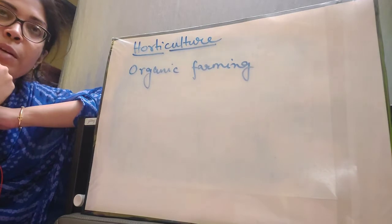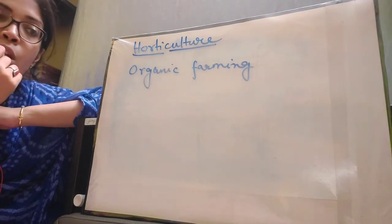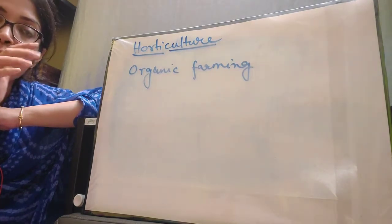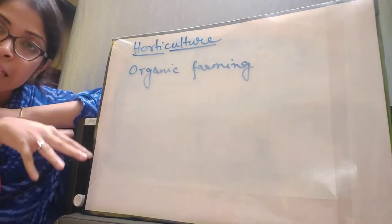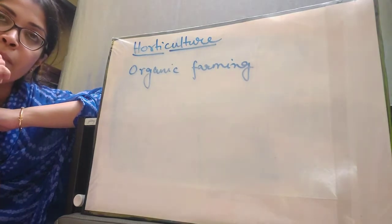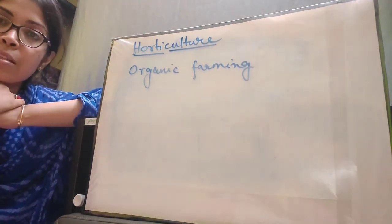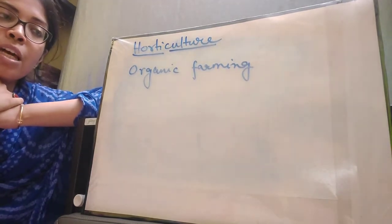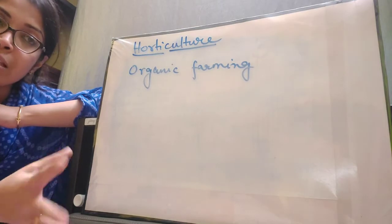Rhizobium is a nitrogen-fixing bacteria. What does it do? Generally, the atmospheric nitrogen is not suitable for the plants to use directly. What happens is the atmospheric nitrogen is trapped by the soil, the soil then fixes it, and then from the soil the plant takes the nitrogen in. This Rhizobium bacteria is a nitrogen-fixing bacteria which lives in the root nodules of the leguminous plants — the plants of the pea family — and they can directly trap the atmospheric nitrogen and convert it in such a way that the plant can directly use it.